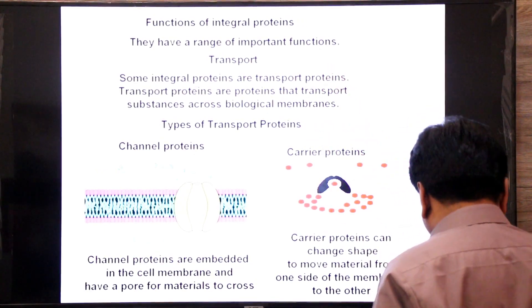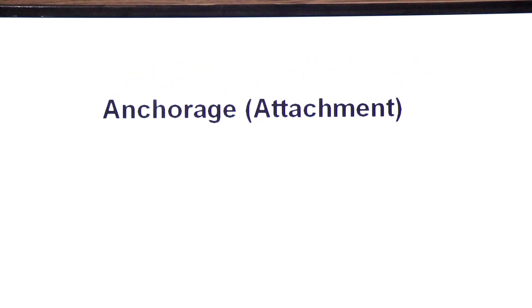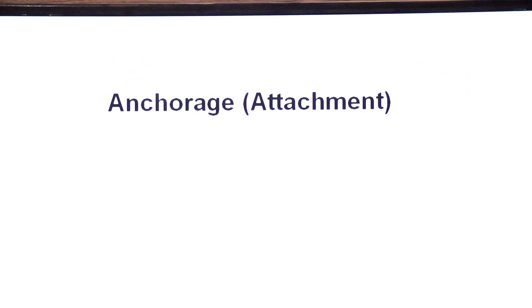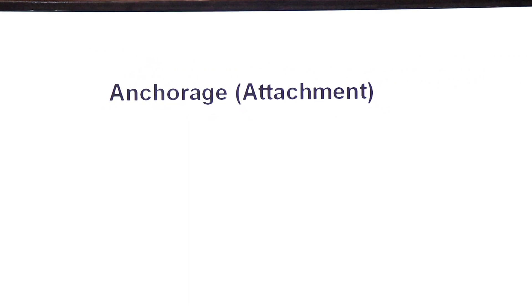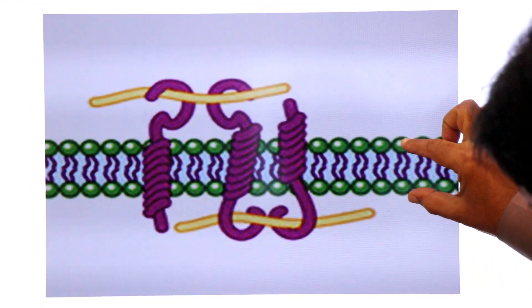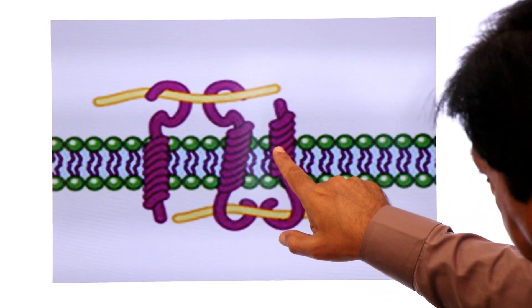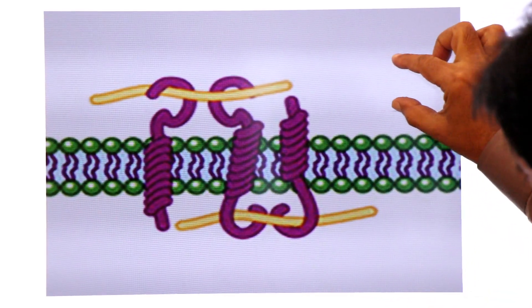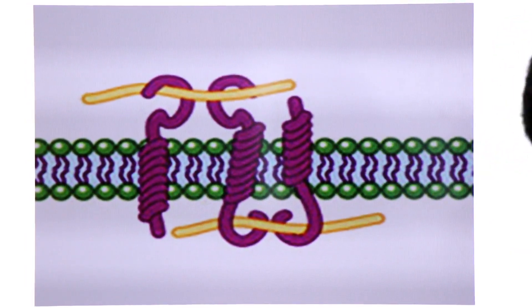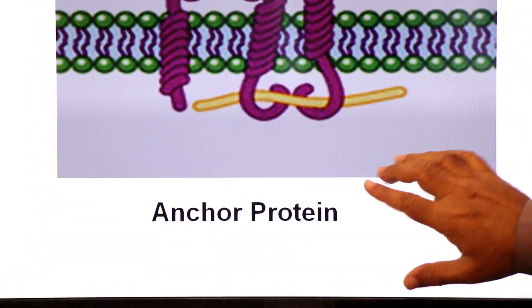The second function of integral proteins is anchorage or attachment — also called linkage. Integral proteins can help link molecules to molecules, providing structural attachment. These are called anchor proteins.